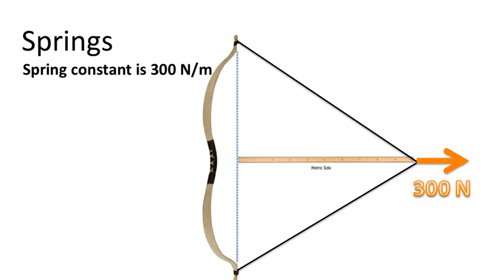Well, if we were to take our meter stick and extend the string one meter back from its equilibrium position, we would need exactly 300 newtons. If we extended only half a meter, we would need 150 newtons. That's what that means, that spring constant, 300 newtons per meter. If you were to pull the string back two meters, you would require 600 newtons of force to do that.